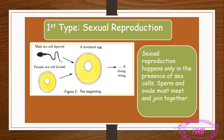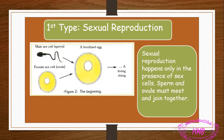As you can see in the picture, this is the male sex cell — the sperm — and this is the female sex cell — the ovule. The sperm and the ovule join together, and when they join they give one cell. Sexual reproduction happens only in the presence of sex cells.